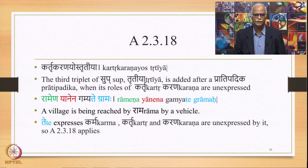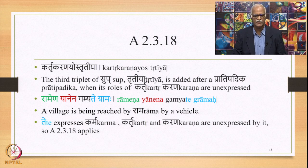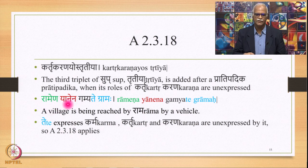We have 'Karthru karanayos tritya,' Sutra 2.3.18. The third triplet of Sup, namely Tritiya, is added after a Pratipatika when the roles of Karthu and Karana are unexpressed. Example: 'Ramena yanena gamyate gramaha' — a village is being reached by Rama by a vehicle. Rama is the Kartha, Grama is the Karma, and Yana is the Karana. Te expresses Karma, so Karthu and Karana are unexpressed by it, and 2.3.18 applies, adding the third triplet after Rama and Yana to give us Ramena and Yanena.